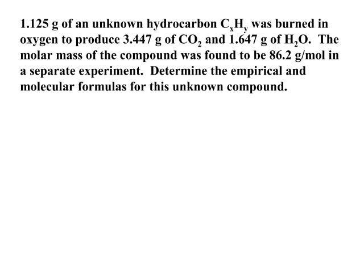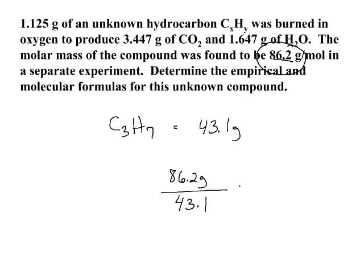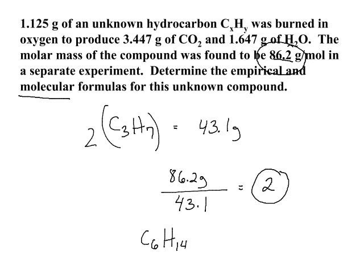We now have to take that empirical formula and turn it into a molecular formula. Knowing that it is C3H7 and that the molar mass of the actual compound is 86.2 grams per mole, the first thing we do is find the molar mass of the empirical formula. Adding up C3H7 gives us 43.1 grams. We then take the actual compound's molar mass of 86.2 grams and divide it by the empirical molar mass, giving us an integer multiplier of 2. This means the actual molecular formula is twice the empirical formula, which is C6H14 — our actual molecular formula.